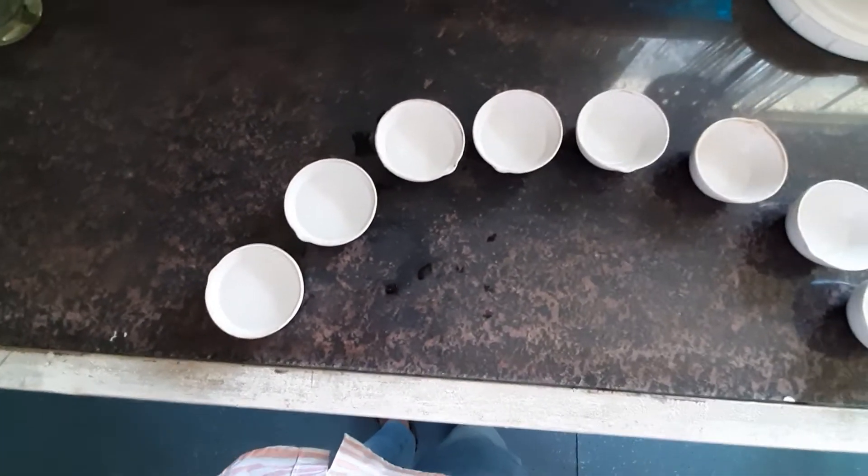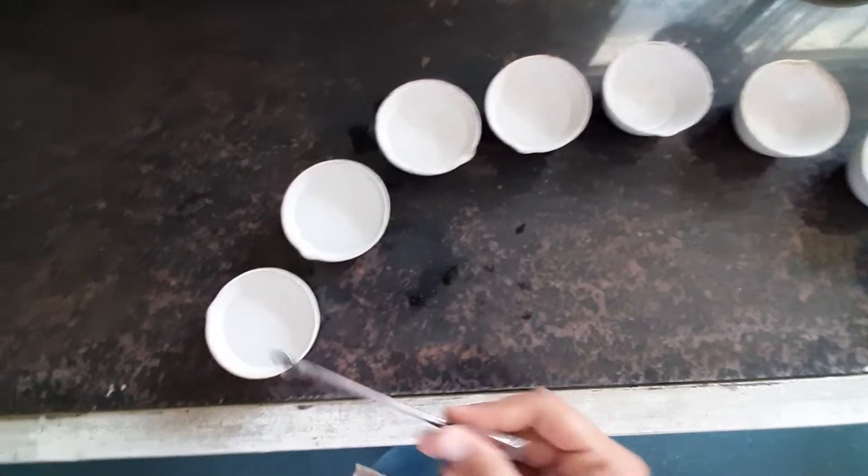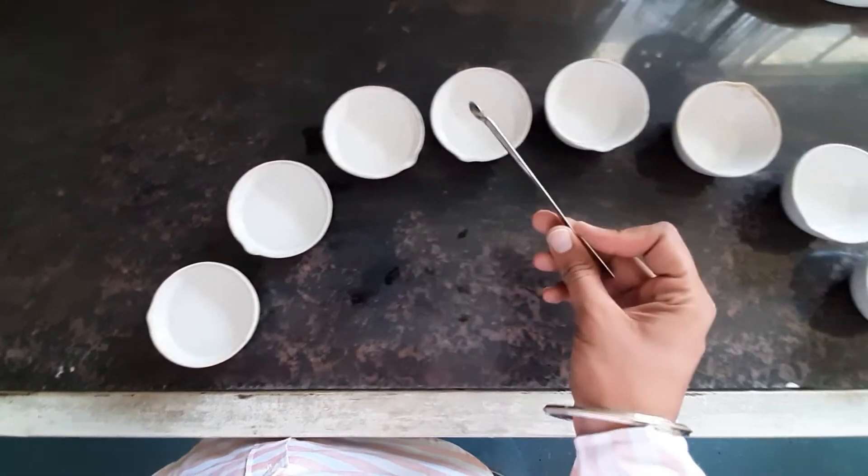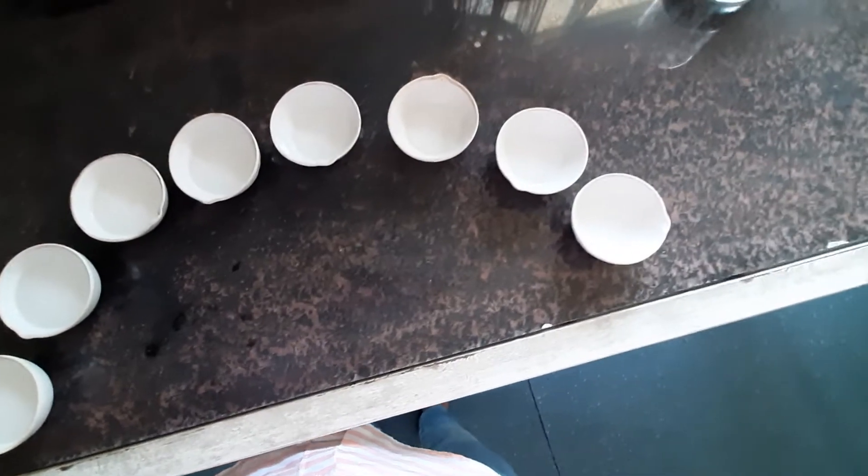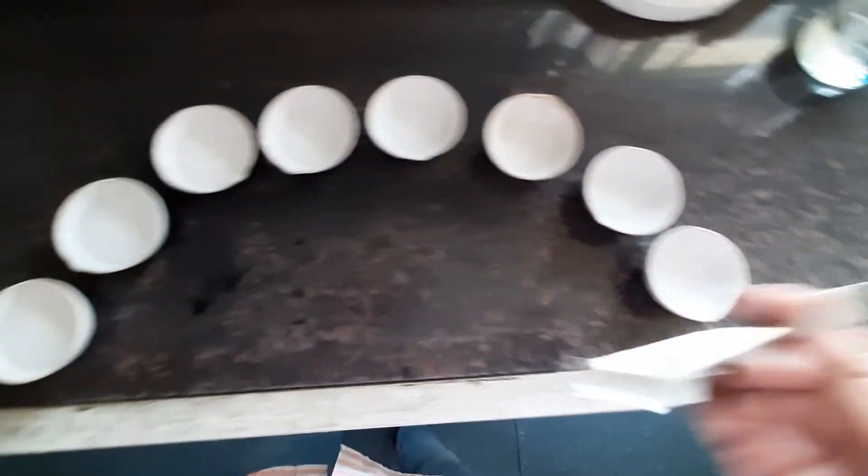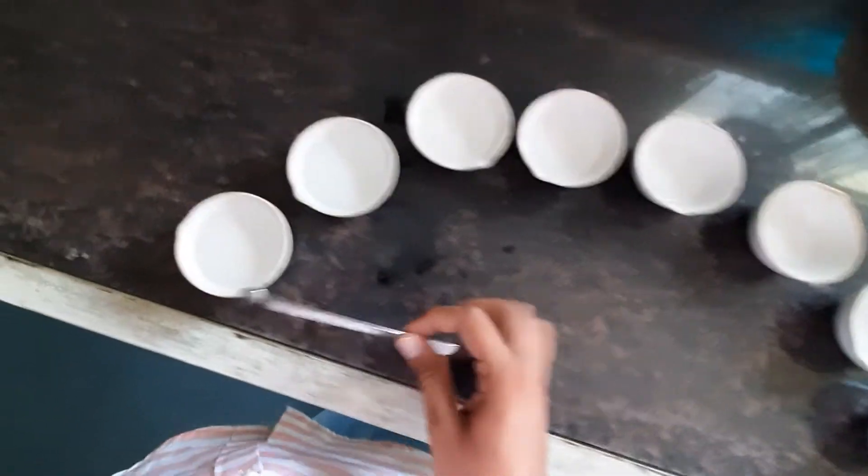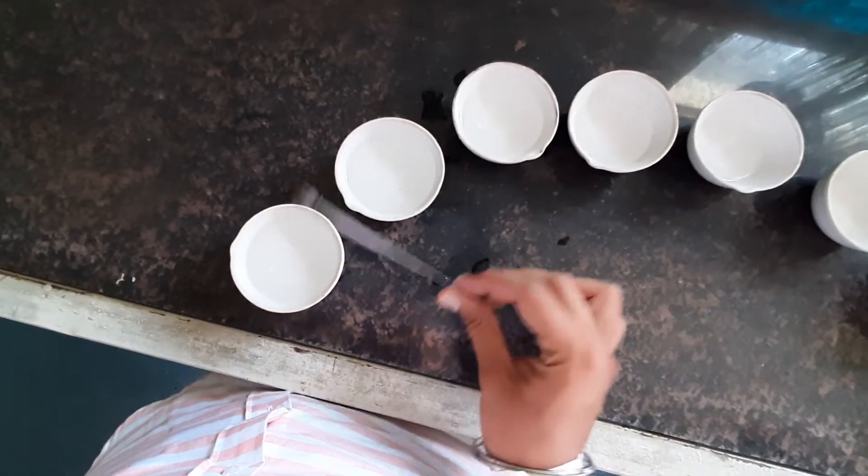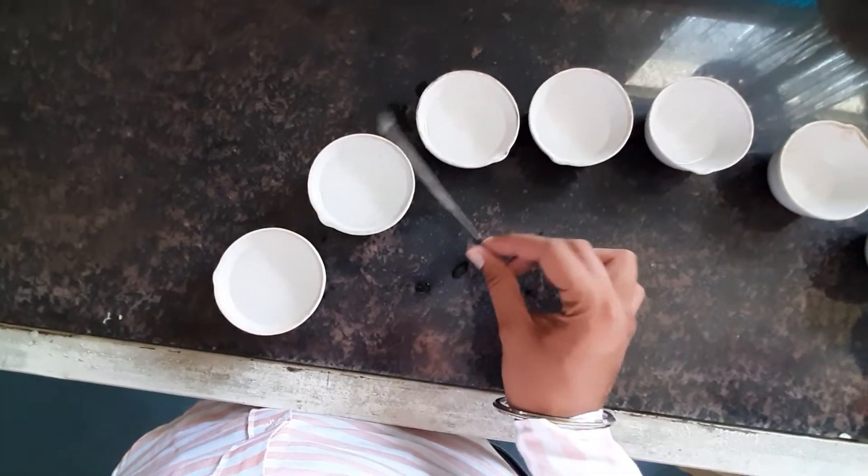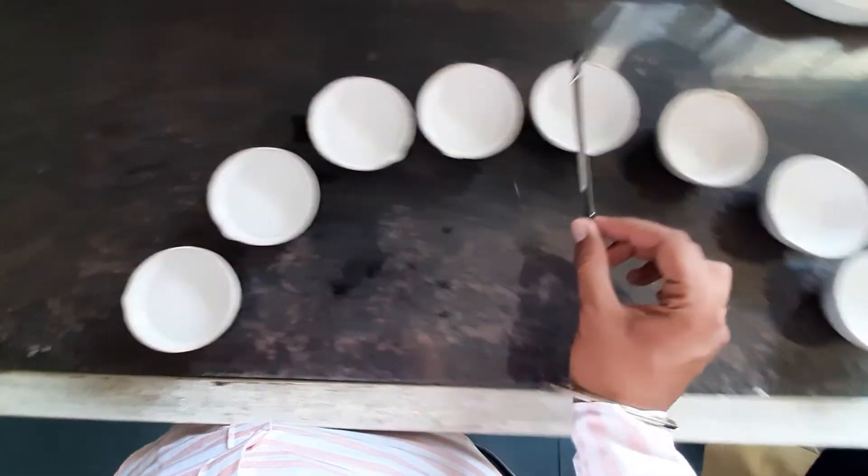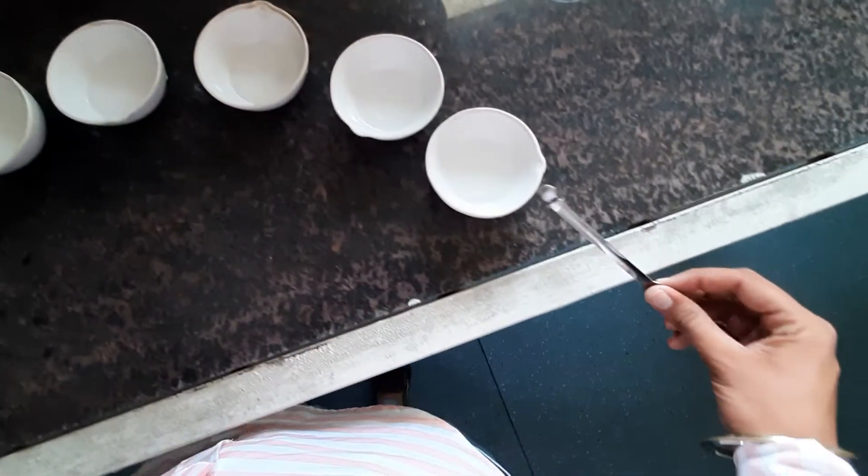The first bowl is filled with the maximum level of water and all the other corresponding bowls have water levels which are lesser from the left hand side. Maximum water is filled in the first, the second bowl has the second level, the third and fourth, and least is present in the last bowl.